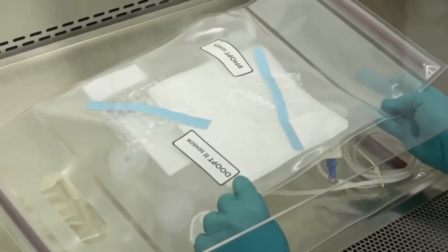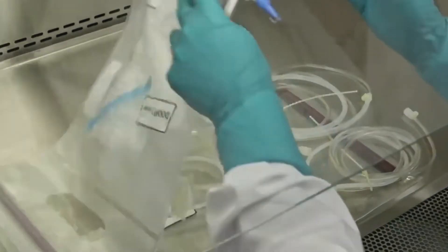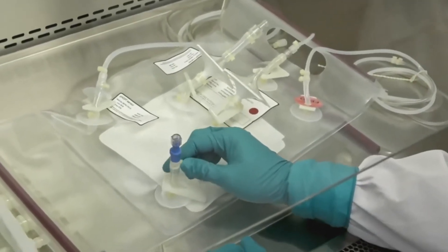You also have a DO sensor and a pH sensor, and we'll leave those bubble wraps on until we get outside of the BSC. Your cell bag is now ready to be installed on the W25 rocking platform.